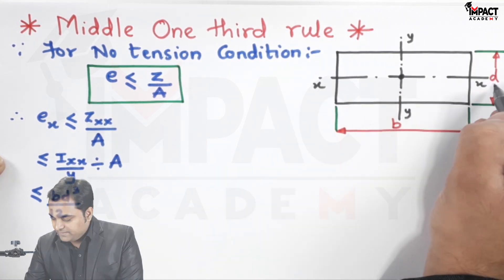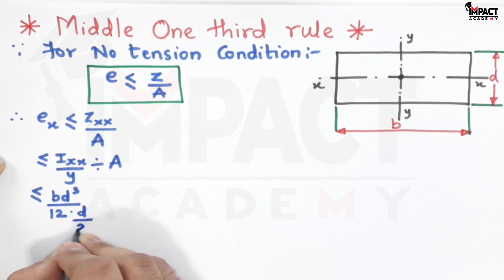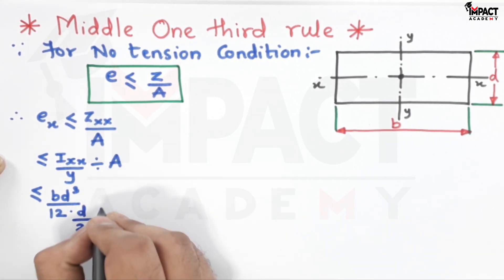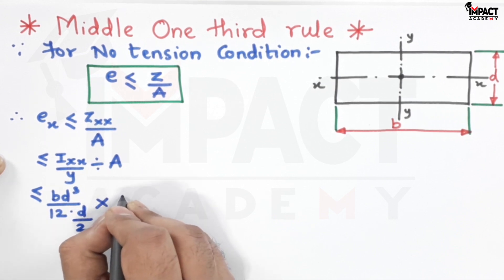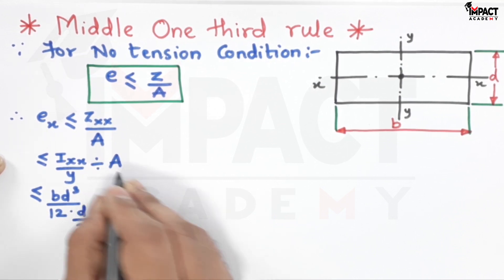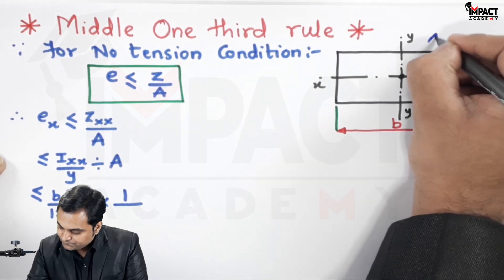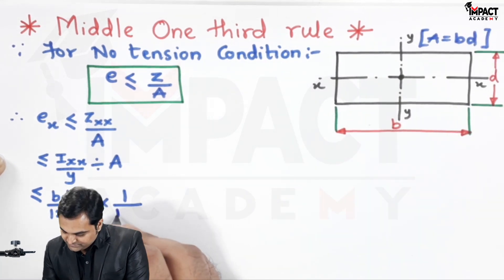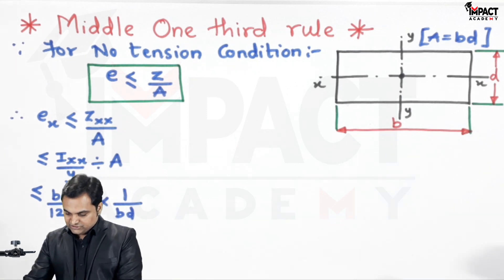In the denominator we have d/2, then divided by area. Taking the reciprocal, that becomes multiplied by 1/area. Area for this rectangular section is b×d.